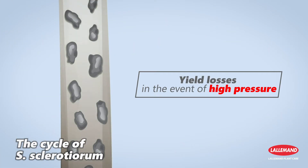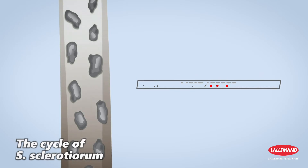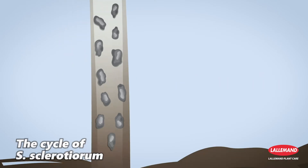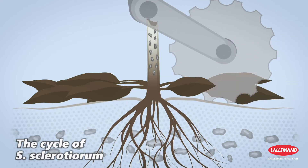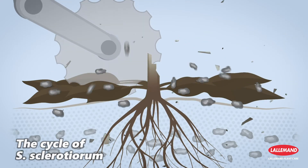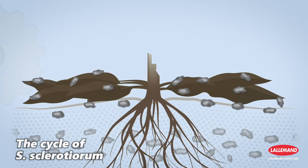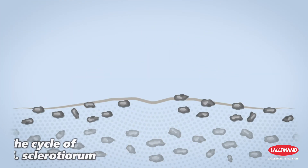Serious yield losses are observed in the event of high pressure. After harvest, the new sclerotia present on the crop residues will fall to the ground, replenishing the inoculum.